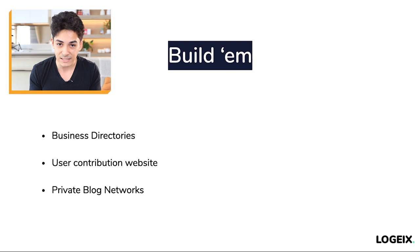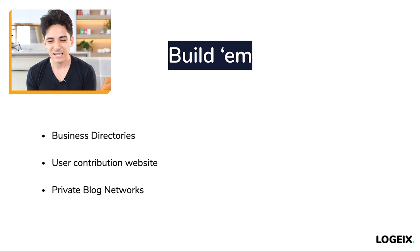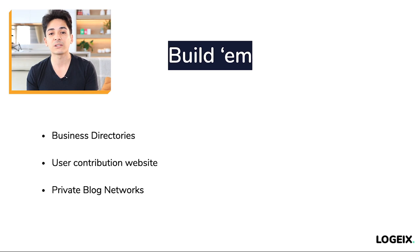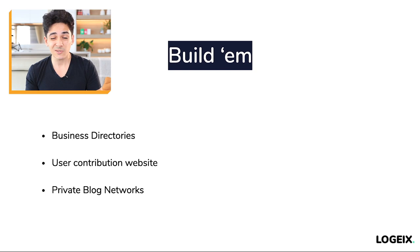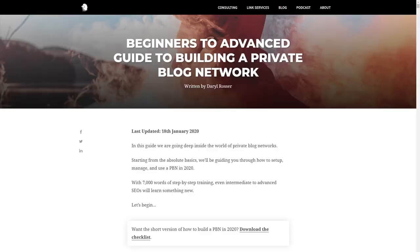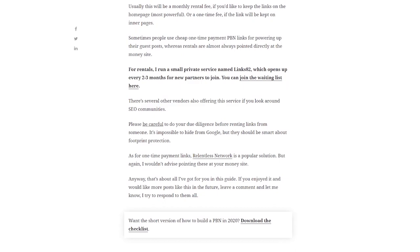It could also be what we call private blog networks. I'm not going to dive deep into that in this course because it's an entire course on its own. Essentially, a private blog network is a series of websites you own specifically for link building. Rather than trying to ask, convince, and earn links from other websites, you create your own websites using aged domains — you buy a domain that already has a bunch of backlinks pointing to it, say 100, 200, or 300 links, and then use that to link to your own website. There's a 10,000-word blog post on my site explaining exactly what these are, how to build them, and how to use them.